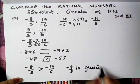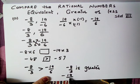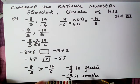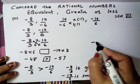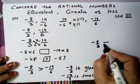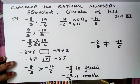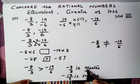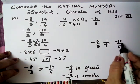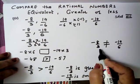Aur smaller kaun sa ho gaya? Aapke paas smaller kaun sa hai? Minus 19 upon 6 is smaller. Ab agar mein equivalent ki baat karun — because both answers are not same — hum likhenge: minus 8 upon 3 is not equal to minus 19 upon 6. Do ko ek hi saath: sabse pehle greater, phir smaller, phir minus 19 upon 6 is not equal to minus 8 upon 3.